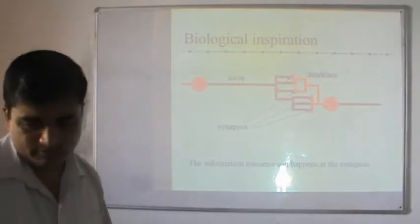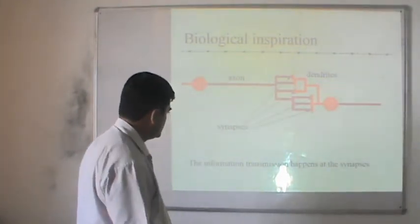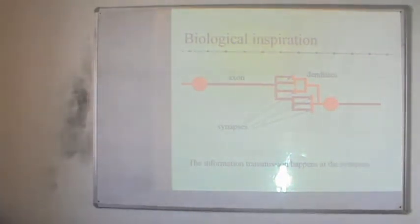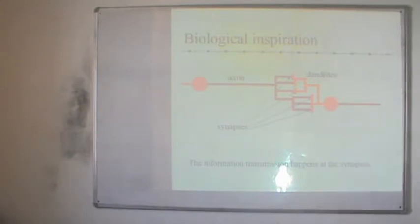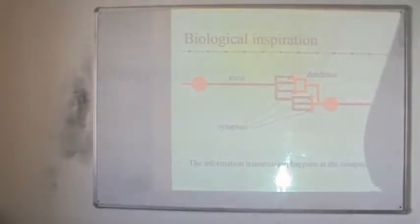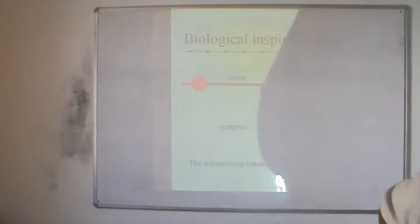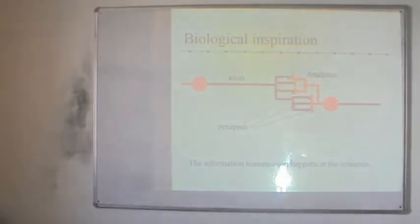The biological neuron has four major parts: dendrites, soma, axon, and synapses. The axon and dendrites connect via synapses, and information transmission happens at the synapses. The dendrites accept inputs, the soma is the processing unit that processes all received information, and the axon turns the processed inputs into outputs. Synapses provide the electrochemical contact between different neurons.